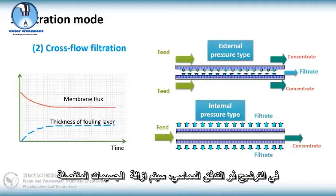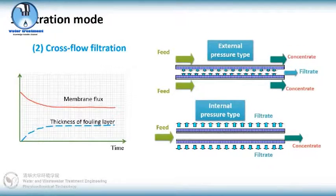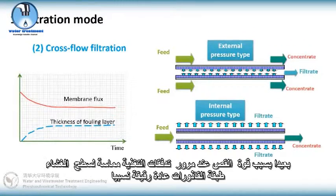In cross-flow filtration, the rejected particles would be flushed away by the shear force when the feed flows along the membrane surface. The fouling layer is usually relatively thin.